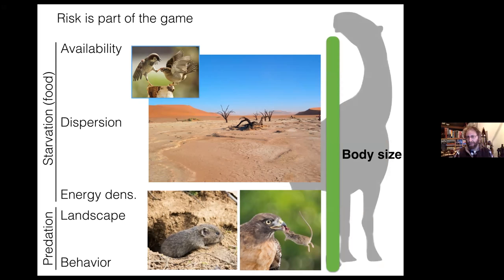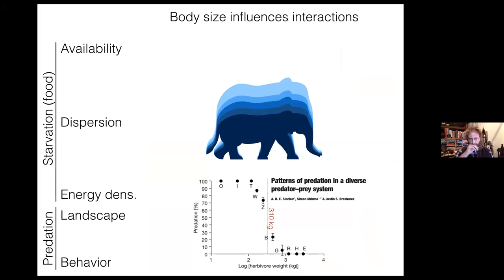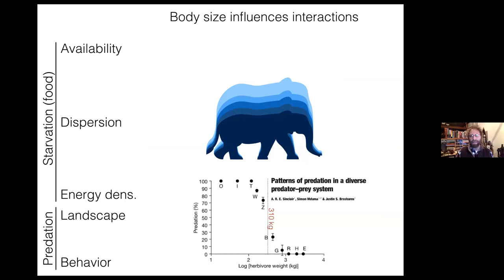Body size is really important — it structures a lot of things in mammalian systems. Here it structures mortality due to predation. We see herbivore mortality rate as a function of mass, with a sharp cutoff at 310 kilograms. If you're smaller than that, you are consumed; if you're larger than that, you escape predation. So body size influences interactions, and that is pretty obvious on ecological timescales.